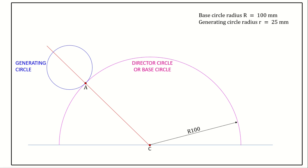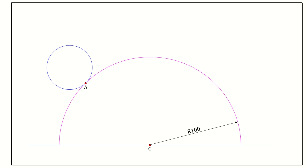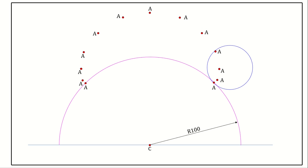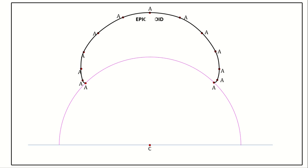Draw on the outside a smaller circle of radius 25 mm. This circle is called the generating circle and the point A is the generating point. If this smaller circle rolls one complete revolution without slipping on the outside of the bigger circle — the director circle — the path traced by point A is called the epicycloid. You can see that point A moves up for half the revolution, then moves down for the next half, and after one complete revolution, point A again touches the director circle.